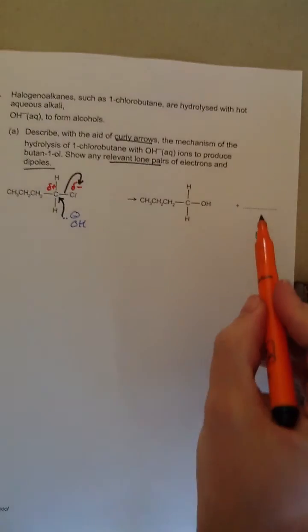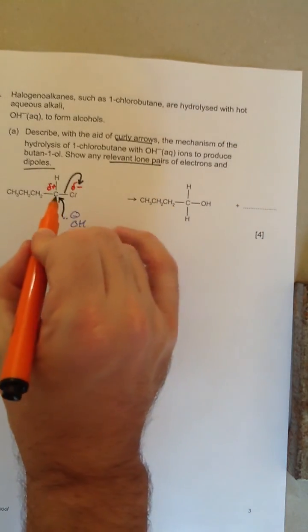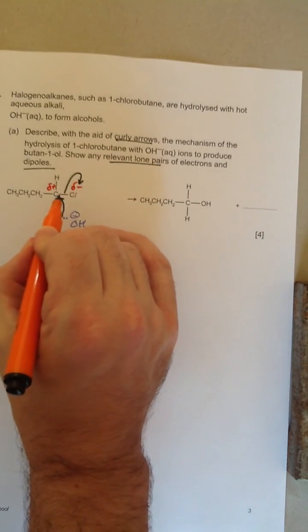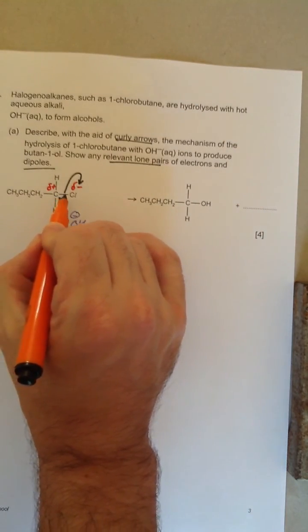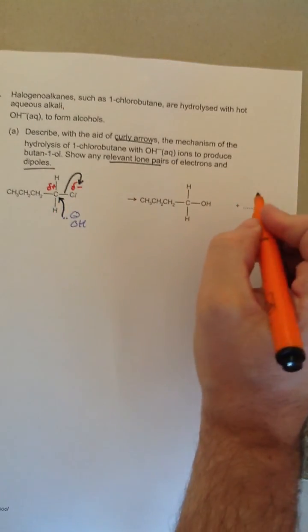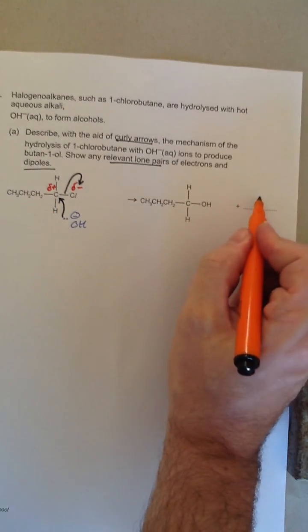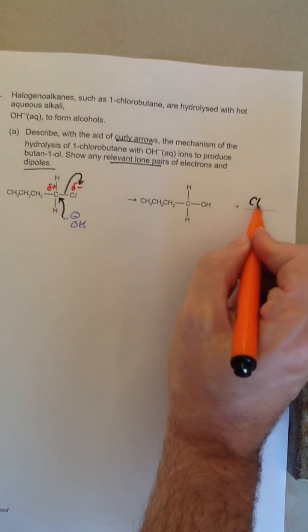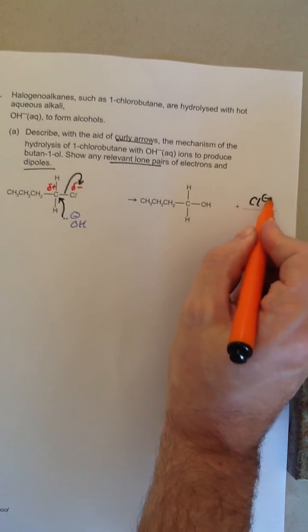And then if we look, there's one final thing over here. What have we made? Well, both the electrons from that bond go onto the Cl. So we end up with Cl minus.